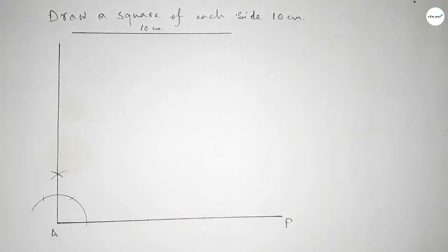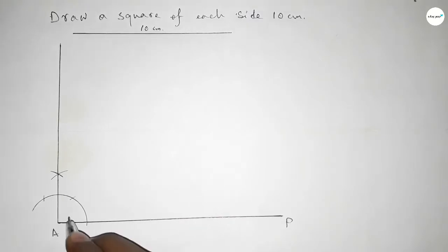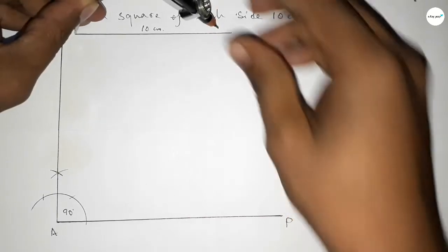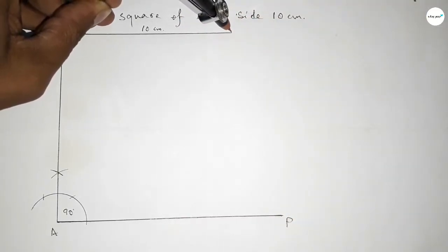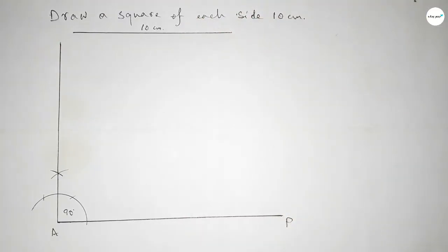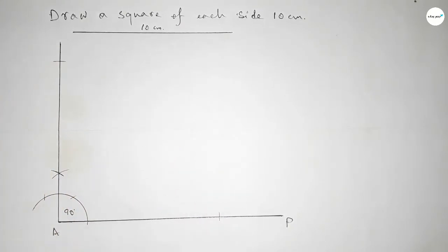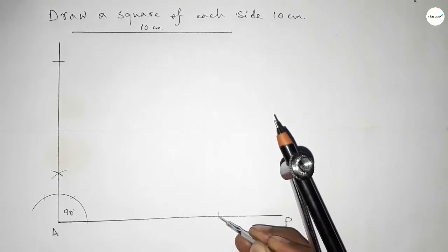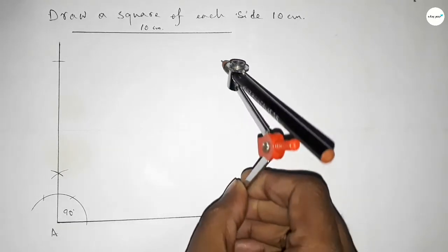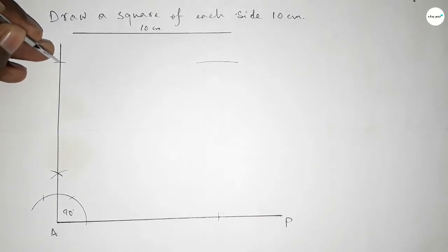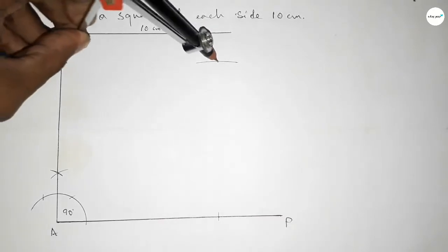This is a 90 degree angle. Now taking the length 10 centimeter by using the compass, putting the compass on point A and cutting here with the same length. Then putting the compass at the new position and drawing an arc with the same length.